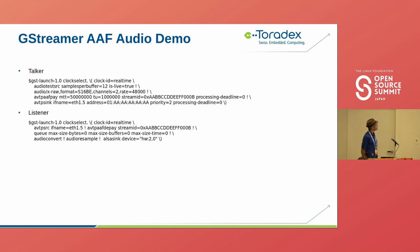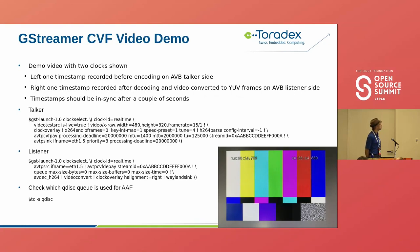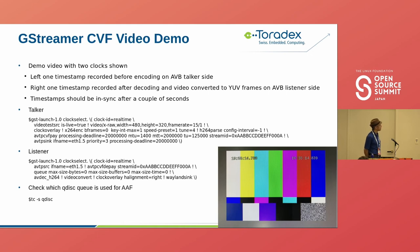For the GStreamer audio demo, the talker and listener commands are provided. More interesting is the video demo, which shows two clocks. The left timestamp is added before encoding on the talker side, and the right timestamp is added at presentation time on the listener side. These timestamps should be in sync — after a couple of seconds for initial synchronization — showing the real-time offset. You can also check queuing with tc -s qdisc.